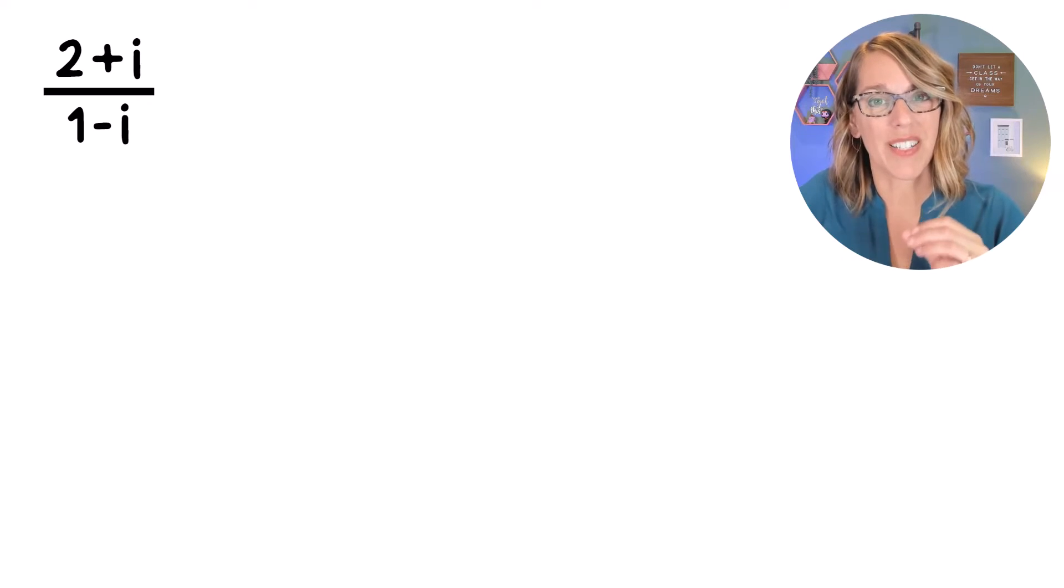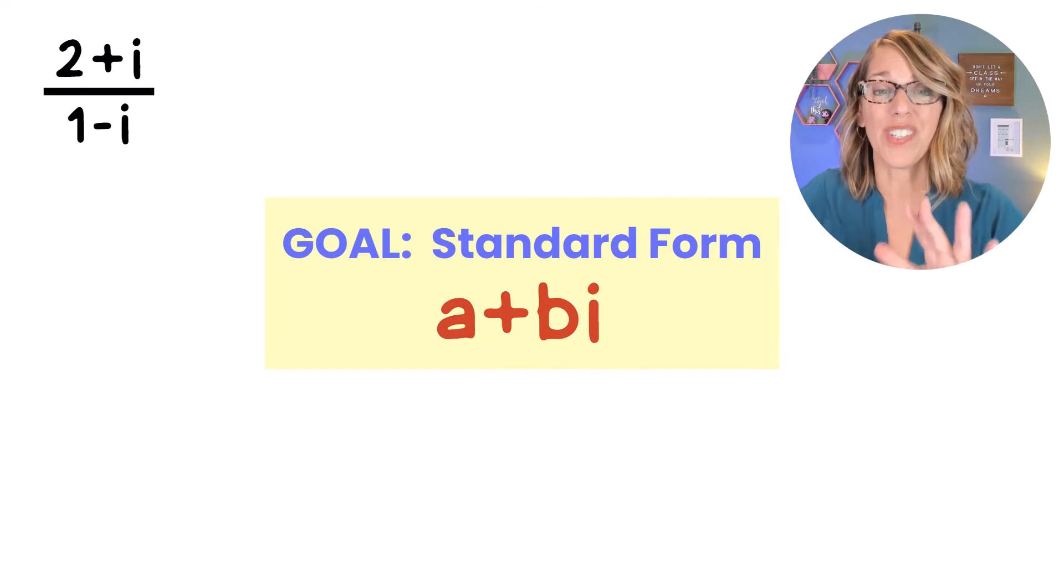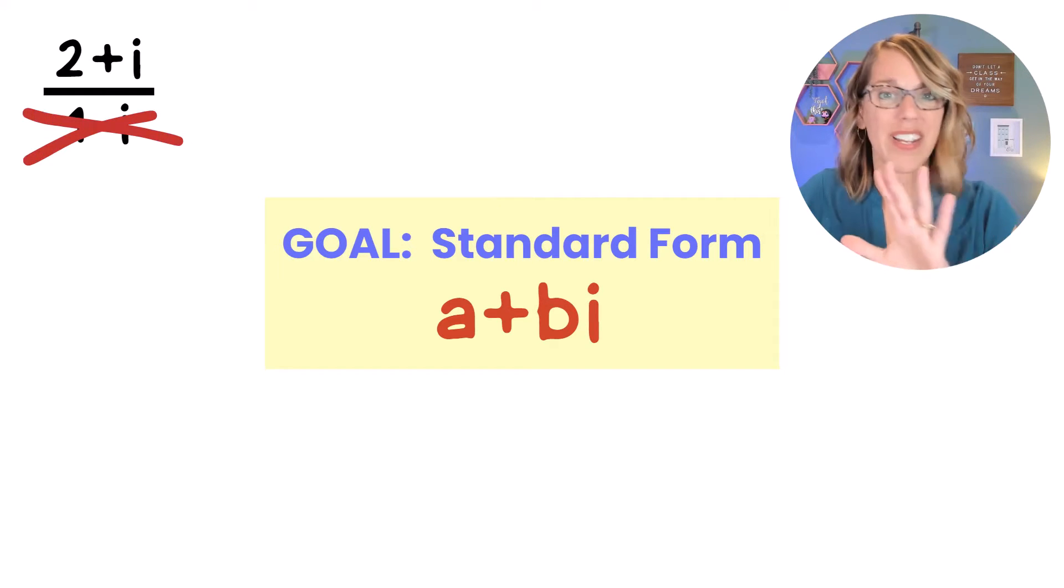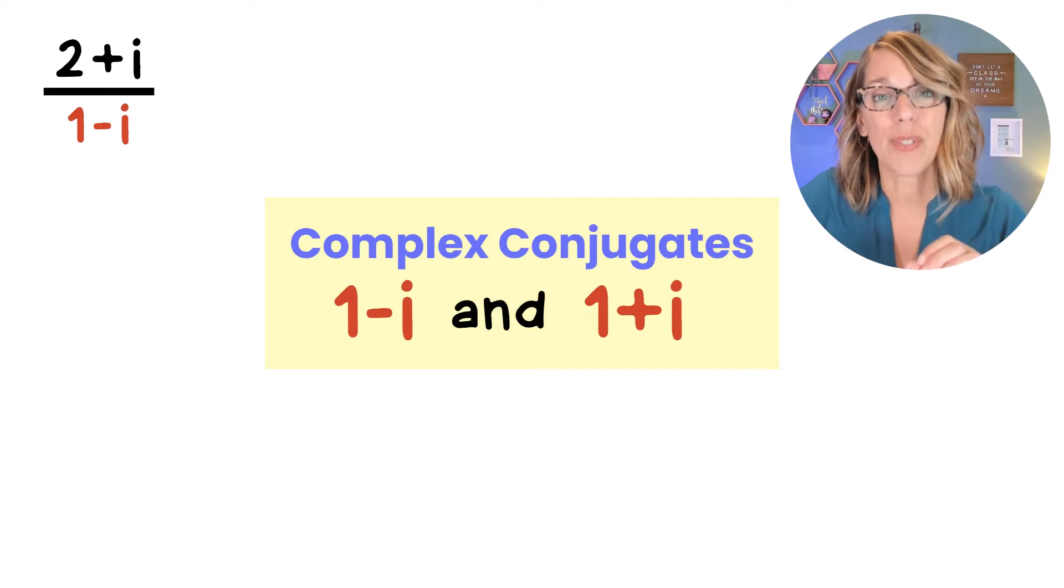Dividing complex numbers really means that we want to change the form into standard form A plus BI. For this one, it means I don't want anything in terms of I in my denominator, and we're going to multiply by the conjugate of 1 minus I.